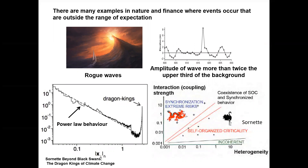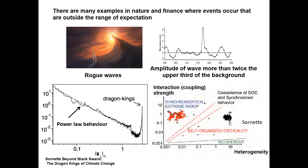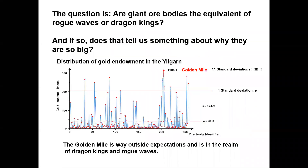That's the way rogue waves are defined. On the other hand we have things called dragon kings that Sohne has talked about — they're not part of a power law distribution, and Sohne has given various models for how they occur and differ from normal power law events. The question is: are giant ore bodies the equivalent of rogue waves or dragon kings, and if so, does that tell us something about why they are so big? Here's a distribution of gold endowment in the Yilgarn in Western Australia, and you can see that the Golden Mile, which is way off scale, is 11 standard deviations away from the mean — way outside expectations, and so by definition in the realm of dragon kings and rogue waves.